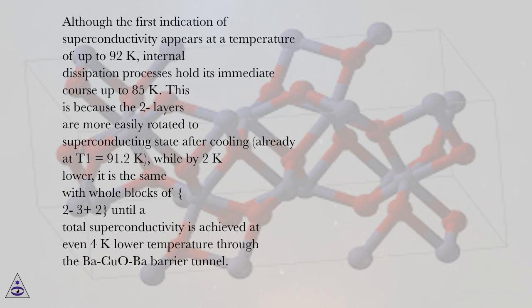This is because the CuO2 layers are more easily rotated to superconducting state after cooling, already at T1 equals 91.2 K, while by 2 K lower, it is the same with whole blocks of 2-3+2, until a total superconductivity is achieved at even 4 K lower temperature through the Ba-CuO-Ba barrier tunnel.